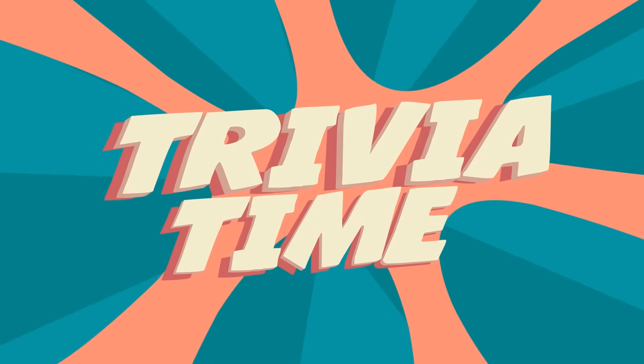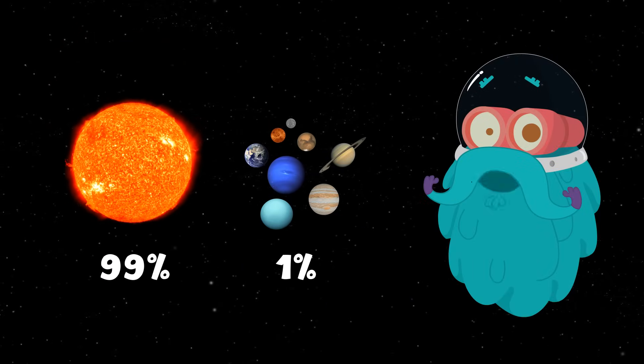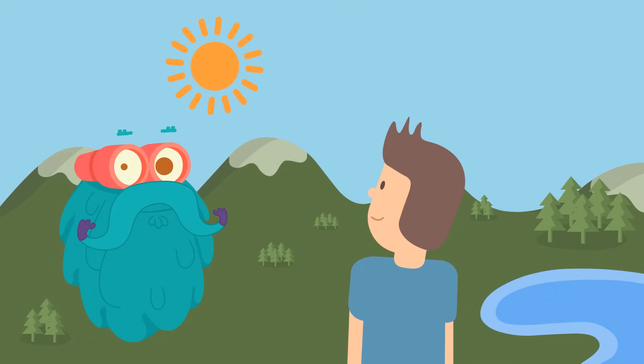Trivia time! Did you know that the sun takes up 99% of the solar system's mass? This means that we are technically living inside the atmosphere of the sun.